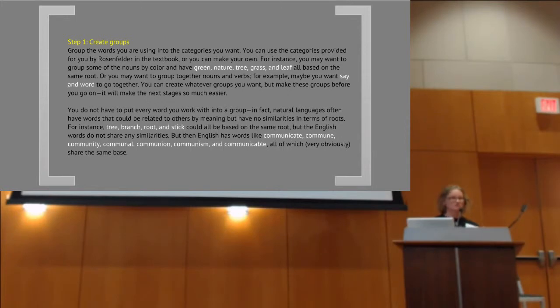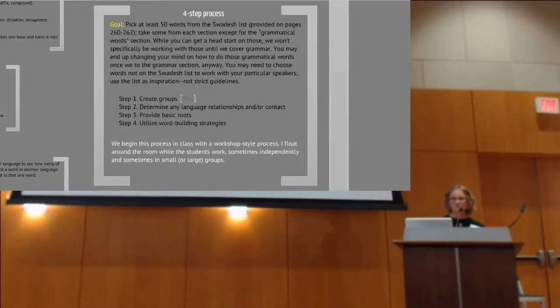Whenever I say create groups as step one, by the way, what I mean is start putting them into kind of these semantic categories, so then maybe they can all share a root. So things like maybe you group it by color and say green, nature, tree, grass, and leaf all share the same root, and I'm going to permutate them in some way to make new words from it. And then I also remind them that you don't necessarily have to do this for everything. So it's like remember you don't have to do this for every single word, but by creating groups you can get a head start on making some common words.